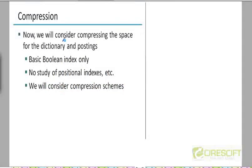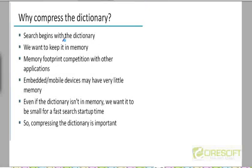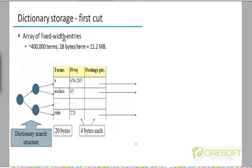We started looking at dictionary compression. We first calculated the amount of space that is going to be taken by the dictionary on the RCV1 corpus without compression. That was our base calculation and it turned out that the size of the dictionary without compression was about 11.2 megabytes. We were then trying to incrementally add more and more compression techniques to cut down the size.